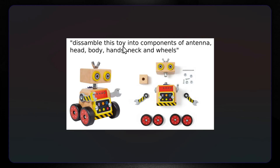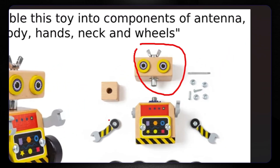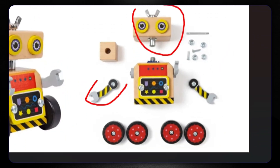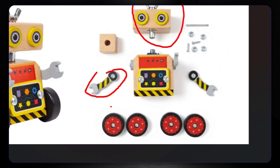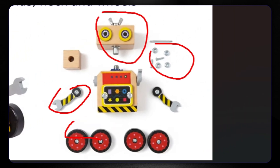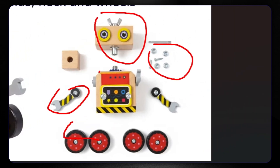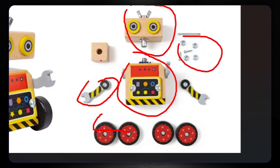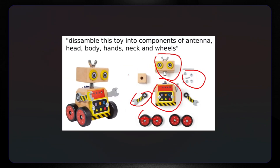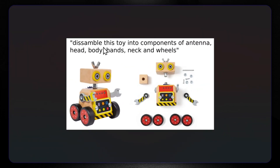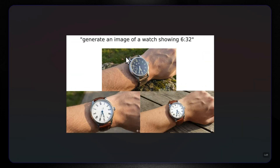Let's disassemble this toy into components: antenna, head, body, hands, neck, and wheels. Let's see if we have everything — here is the head, here are the hands, the wheels, the screws, and the body. Everything is there, disassembled exactly as it was mentioned in the prompt.